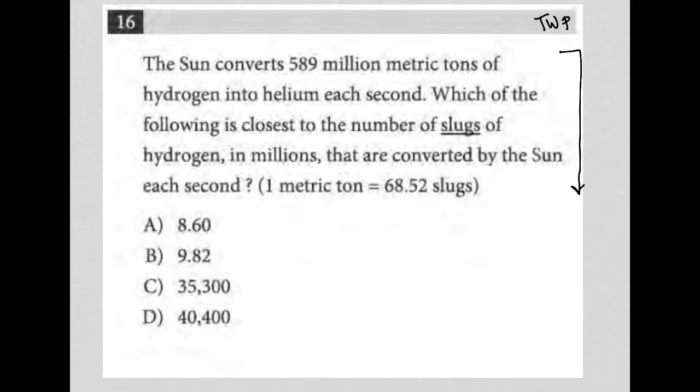This question says the sun converts 589 million metric tons of hydrogen into helium each second. I'm going to just write that down, 589 million per second.